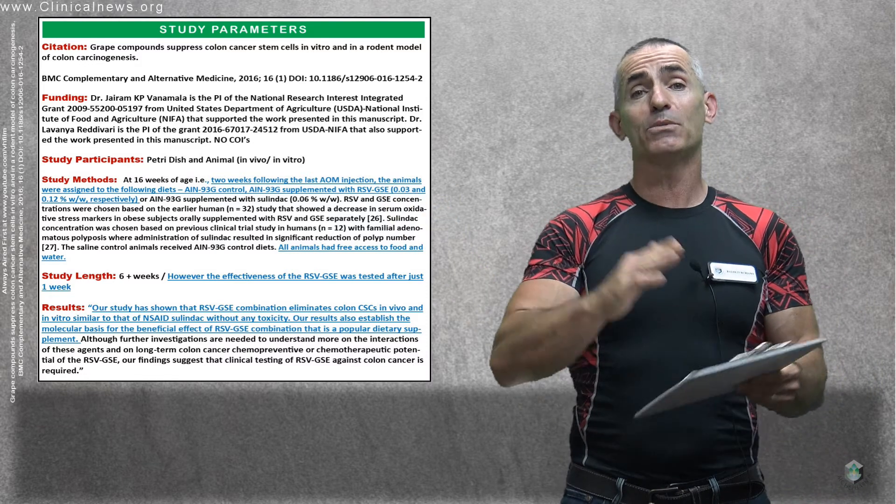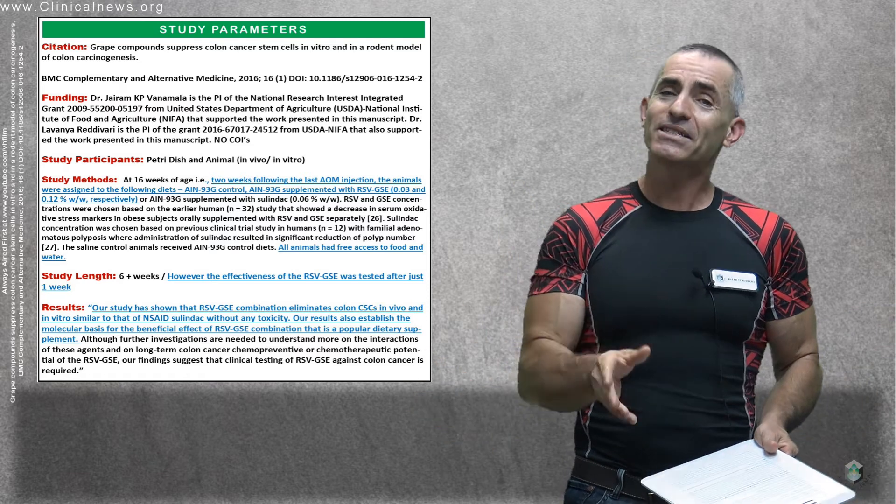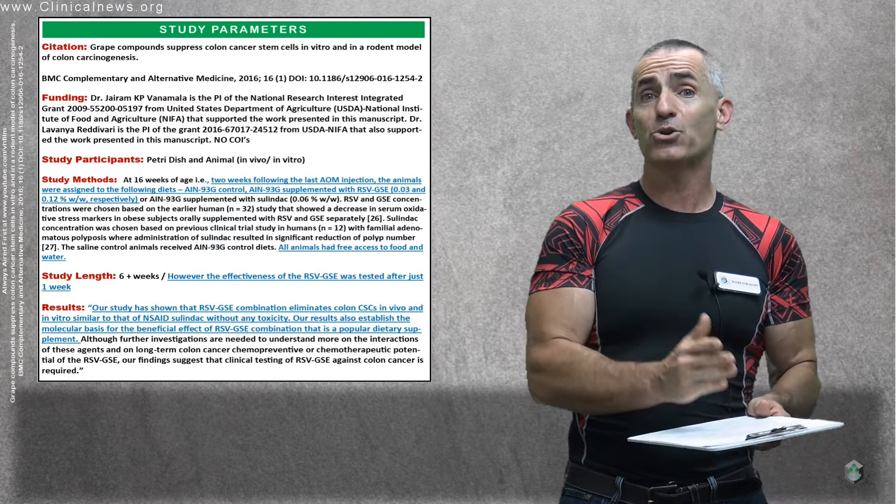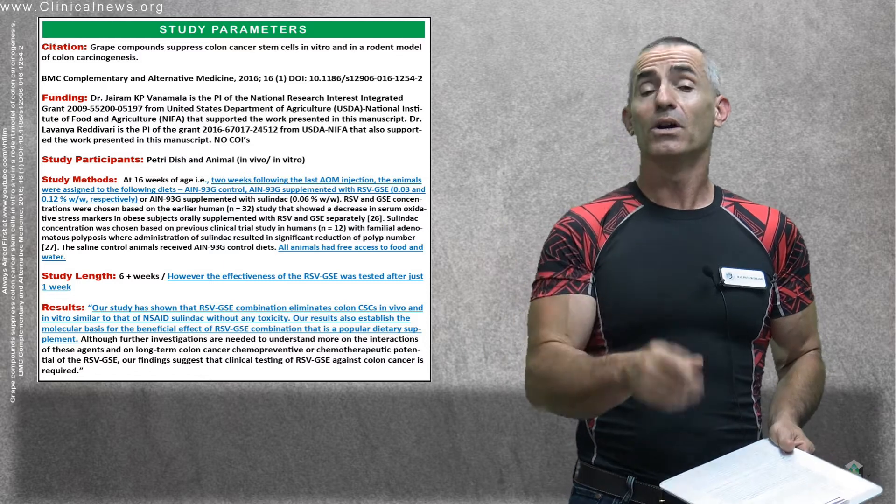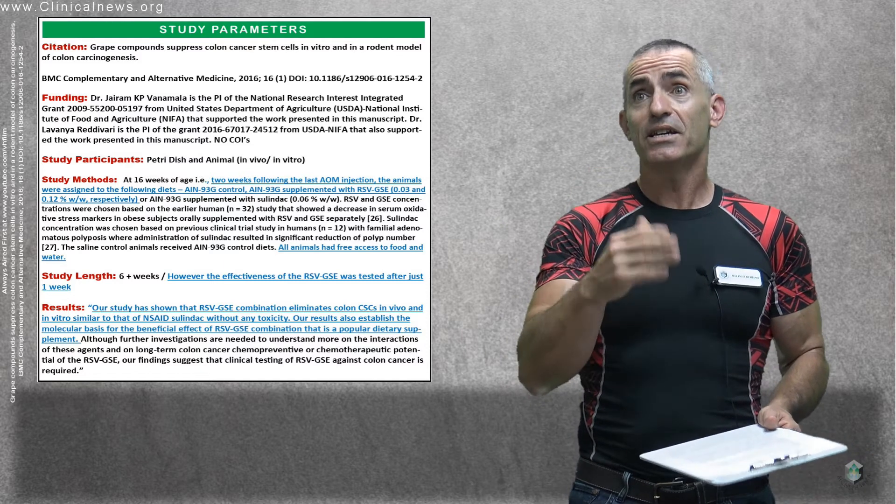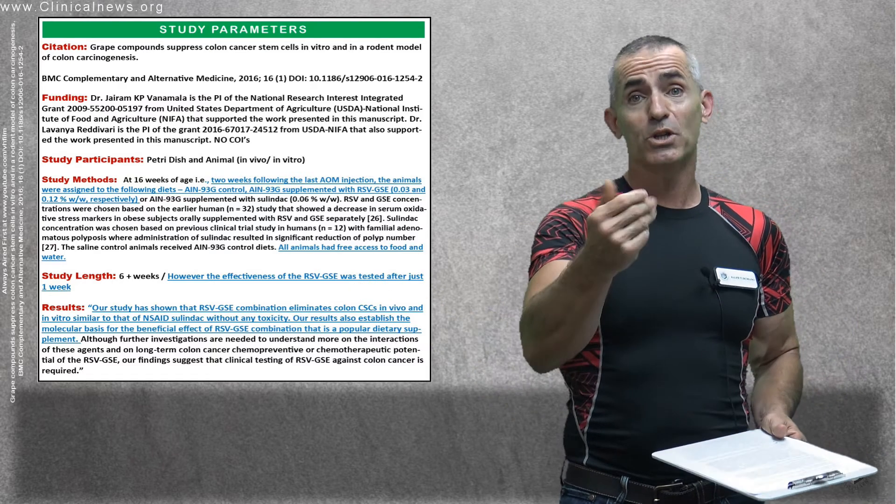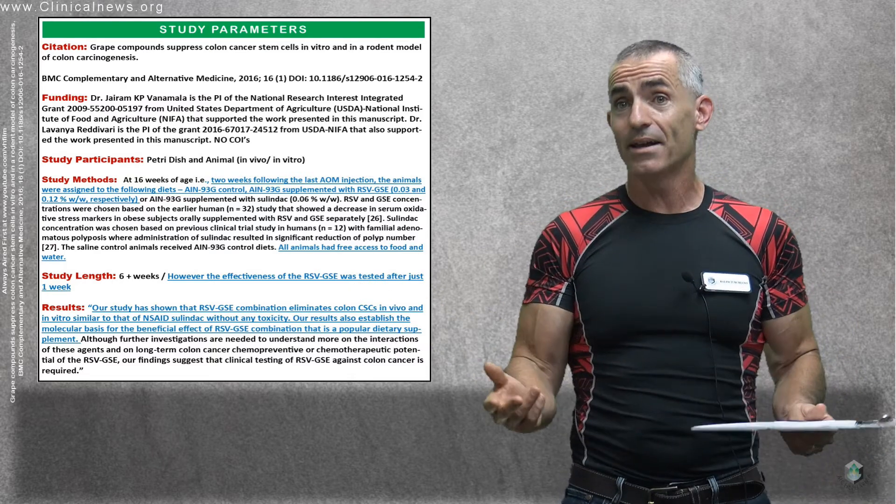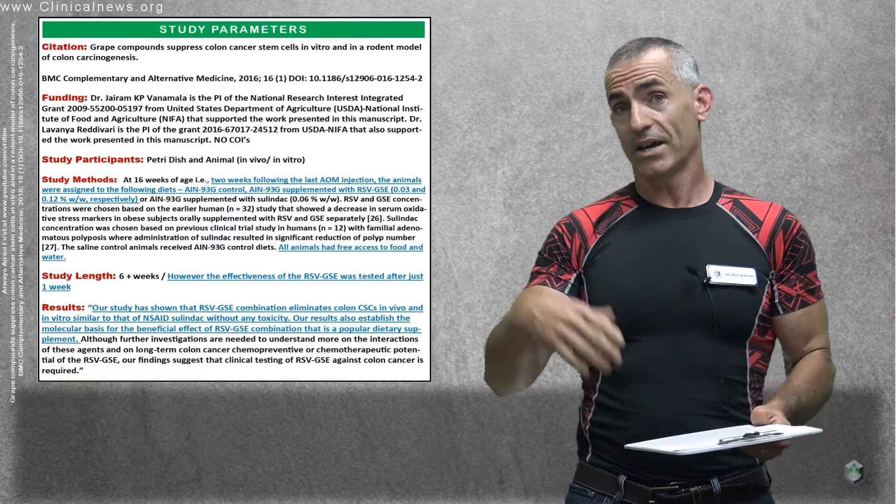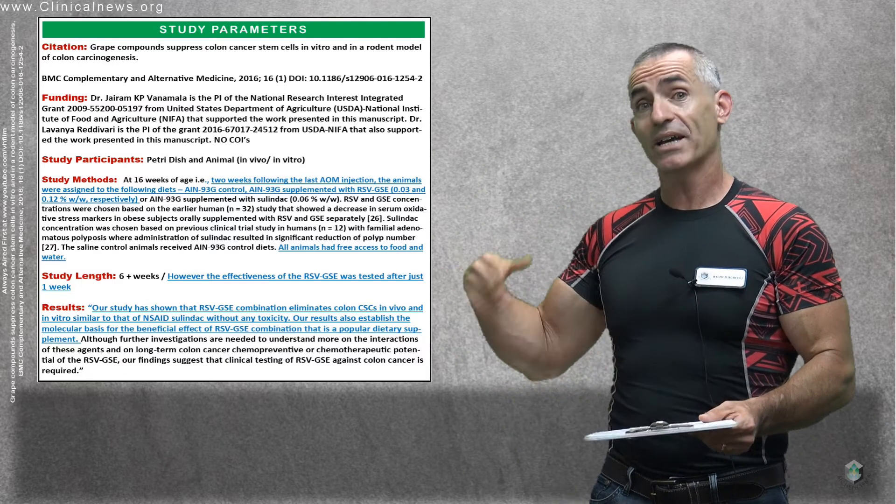So basically, I didn't want to list the amount that may translate into humans. However, the researchers state this is basically the amount, food percentage-wise, that is typically used in human trials themselves. So not a lot, but yet extremely effective. As you read towards the bottom, all animals had free access to food and water.